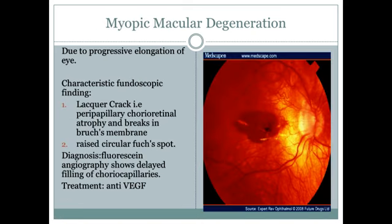Myopic macular degeneration occurs because the eyeball is elongated — progressive elongation of the eye causes the retina to degenerate similarly to a stretch mark. The characteristic fundoscopic finding is lacquer cracks.